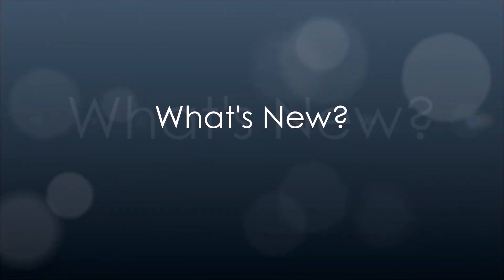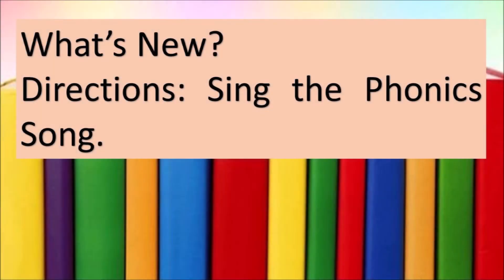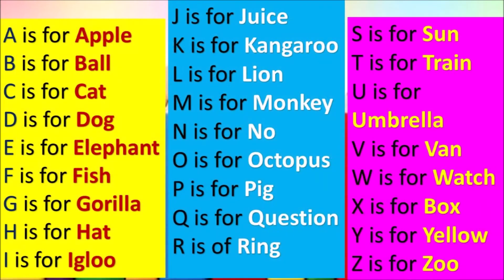What's new? Directions: sing the phonic song! A is for apple. B is for ball. C is for cat. D is for dog. E is for elephant. F is for fish. G is for gorilla. H is for hat. I is for igloo. J is for juice. K is for kangaroo. L is for lion.